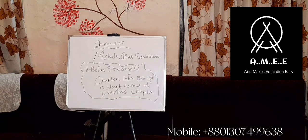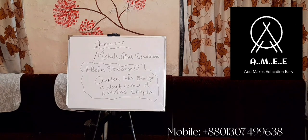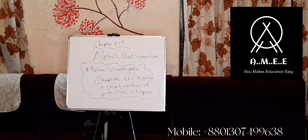Why does diamond have high melting and boiling points? In diamond, all carbon atoms are bonded with four other carbon atoms with strong covalent bonds, and this makes a giant three-dimensional structure. To overcome this bond requires a lot of energy, which is why diamond has high melting and boiling points.